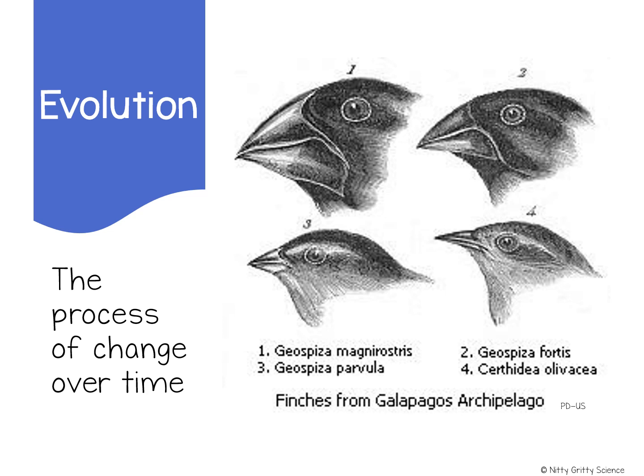One was that species are fixed or permanent — in other words, they did not change. The other idea was that Earth itself is less than 10,000 years old and also relatively unchanging. But once people started becoming aware of the incredible diversity of organisms, both past and present, ideas were challenged and people began to study what we call evolution.